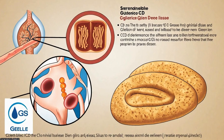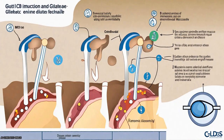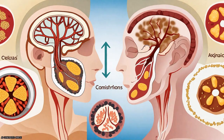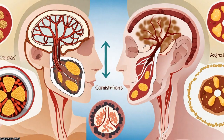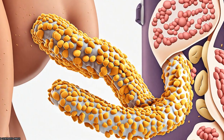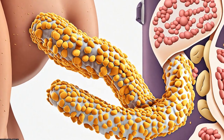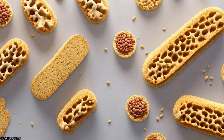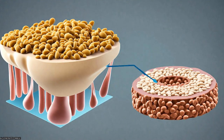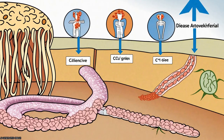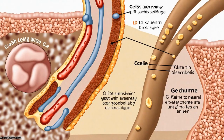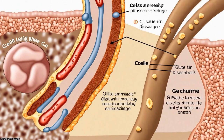This study compares celiac disease (CD) and gluten-sensitive individuals (GS) to understand their similarities and differences. CD is an autoimmune disorder triggered by gluten, while GS cannot tolerate gluten but has a less severe clinical picture.